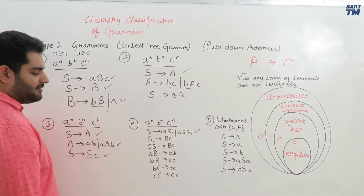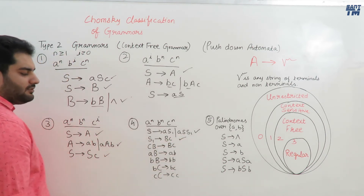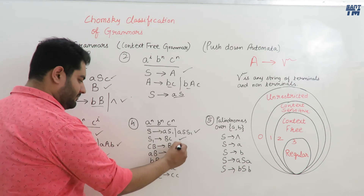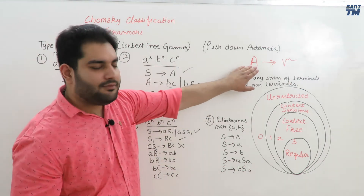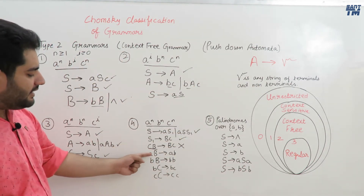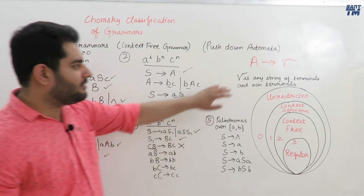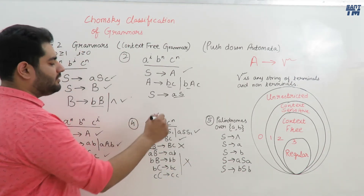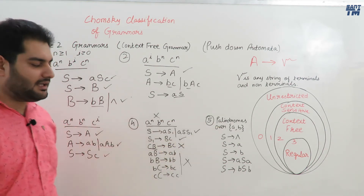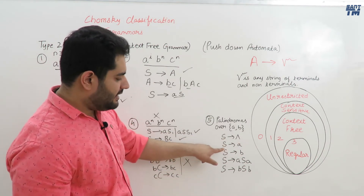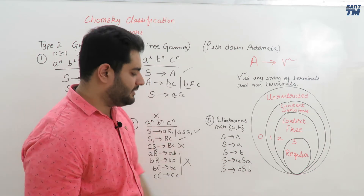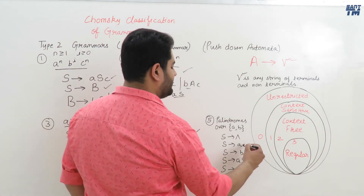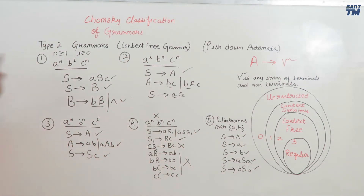For a^n b^n c^n: S derives AS1 is a valid combination of terminals and non-terminals. S1 derives BC is also correct. However, CB derives BC is not correct because at the left hand side we can have only one non-terminal, but here we have two. Similarly AB derives AB has a terminal and non-terminal on the LHS. So a^n b^n c^n is not a context free grammar. For palindromes over {a, b}, all production rules are valid combinations, so palindromes is a context free grammar.